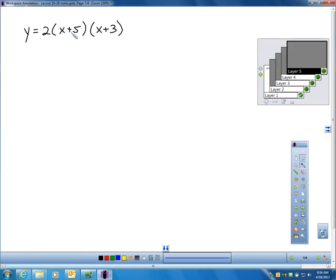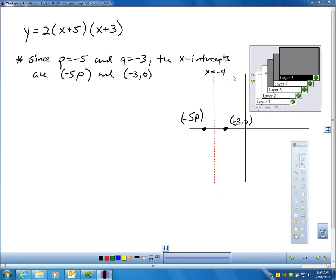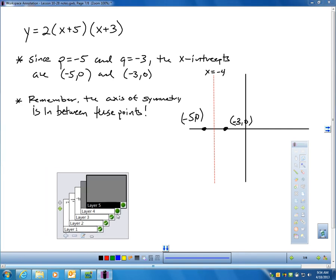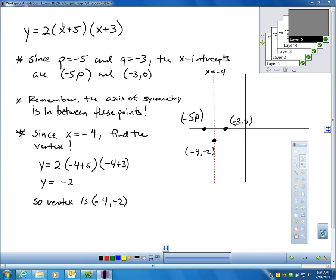If it's in intercept form, first of all, my intercepts have to be negative 5 and negative 3, because if I plug in a negative 5 here, I get 0, and if I plug in negative 3 here, I get 0. So there's my intercepts. The axis of symmetry has to be right in between. It's at negative 4. My vertex has to be on the axis of symmetry. So if the axis of symmetry is negative 4, if I put a negative 4 in for X in each, I'm going to end up with negative 2, so my vertex must be negative 4, negative 2. 4 left, 2 down.